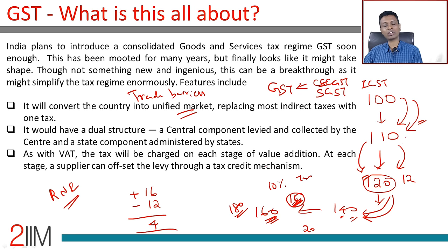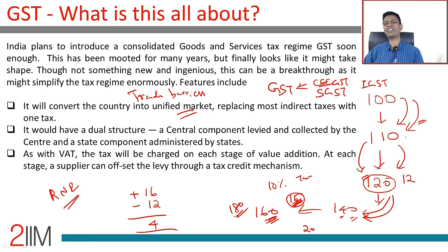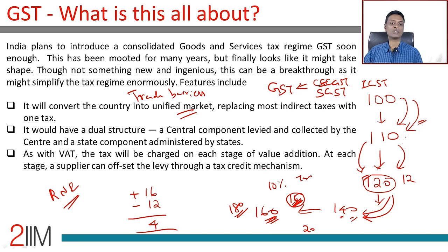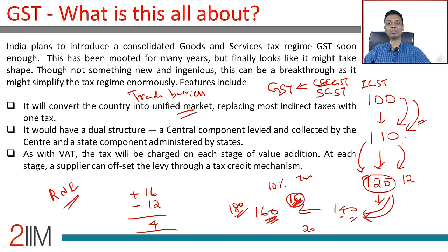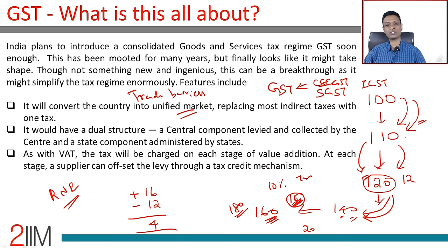The idea is: unify and simplify, provide offsets for everybody under one system. Once implemented, tax evasion should reduce, consumer prices should technically be lower, the taxing system should be simplified, and trade barriers will be removed. However, GST is not a silver bullet — it won't directly create new growth. It's like cleaning up your house — it simplifies life and sets up the economy for future growth, but alone it won't make us grow faster.